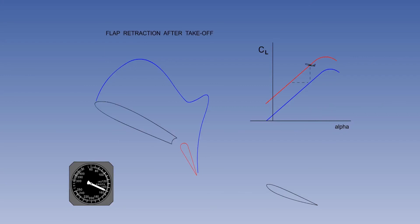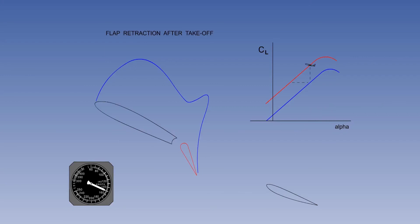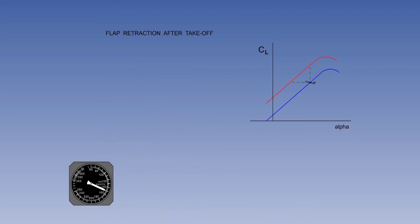This aircraft has just taken off and it is now time to retract the flaps. Note the indicated airspeed of 150 knots and the aircraft position on the flaps-down lift curve. As the flaps retract, the lift coefficient decreases. Lift is now less than the weight and the aircraft will sink. Increasing the angle of attack to keep lift the same is not an option because, as you can see from the lift curve, the aircraft will stall. Obviously, this is not the way to retract the flaps.